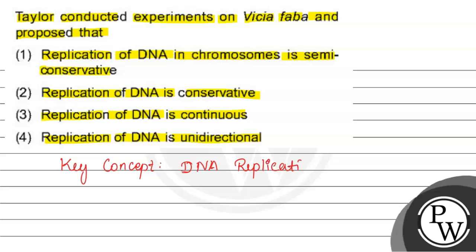तो DNA replication में क्या होता है — हमारे दो parental strands जो होते हैं, जो 5' to 3' और 3' to 5' होते हैं, वो divide करके दो copies बनाएंगे.